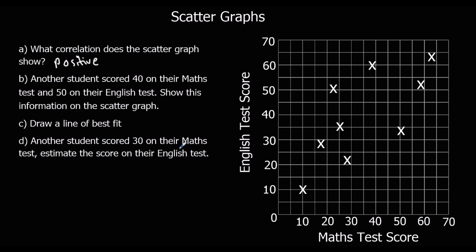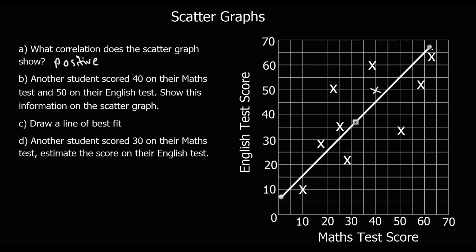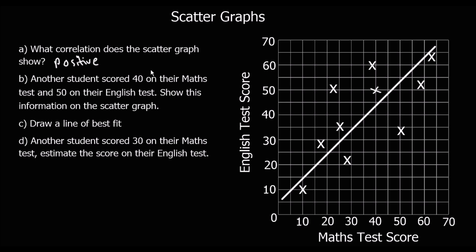Another student got 40 on their maths and 50 on their English — let's show that by putting an X at 40, 50. For the line of best fit, we want roughly the same number of points on both sides — about 5 on each side — so we draw a line going through there. If a student scores 30 on their maths test, we estimate their English score by going up from 30 to the line and then across — it's just underneath 35, so let's say 34.